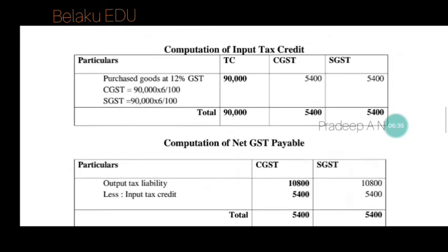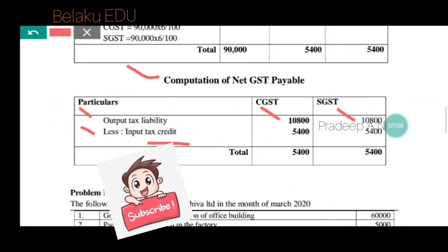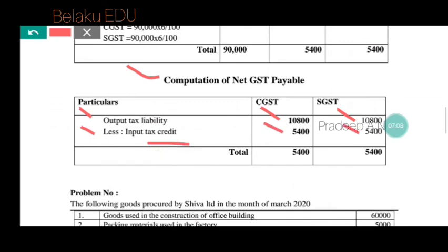Last step: computation of net GST payable. Output tax liability on sales: CGST 10,800 and SGST 10,800. Less input tax credit on purchases: CGST 5,400 and SGST 5,400. The remaining balance is CGST 5,400 and SGST 5,400. This balance is the net GST payable to the government.